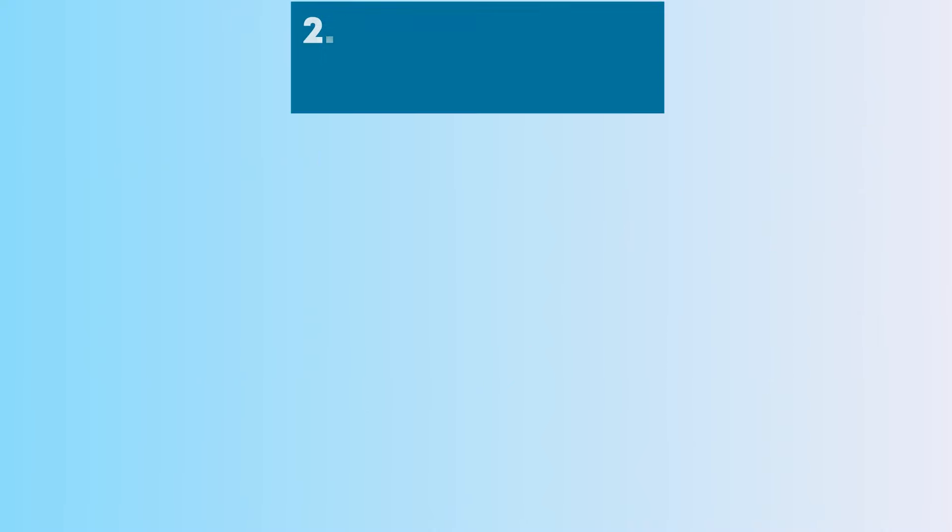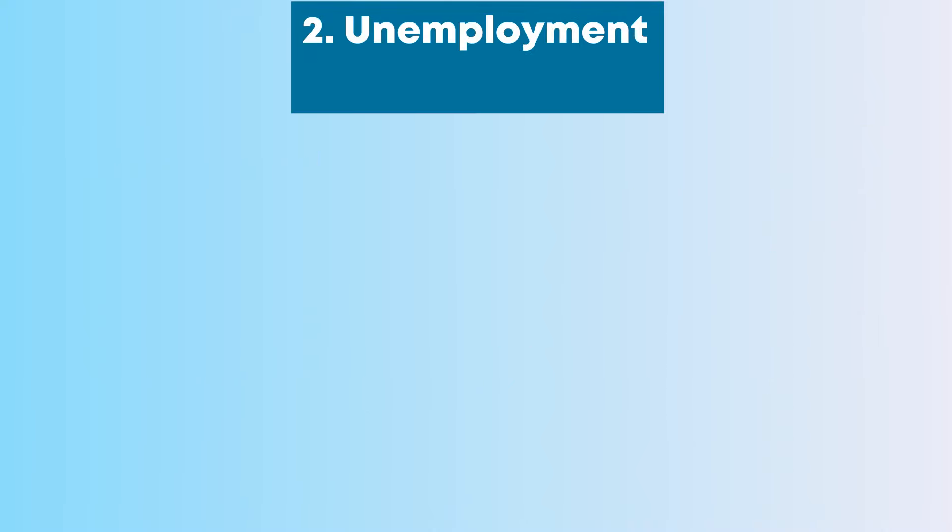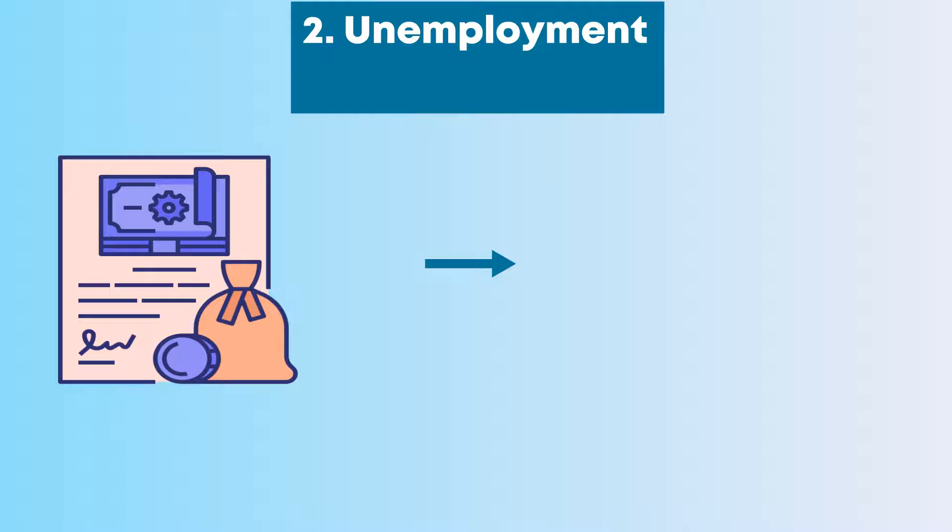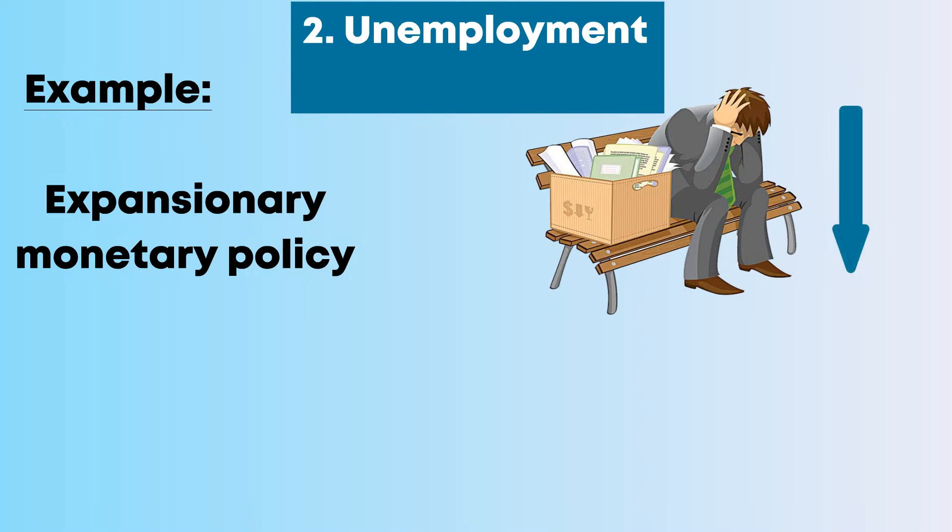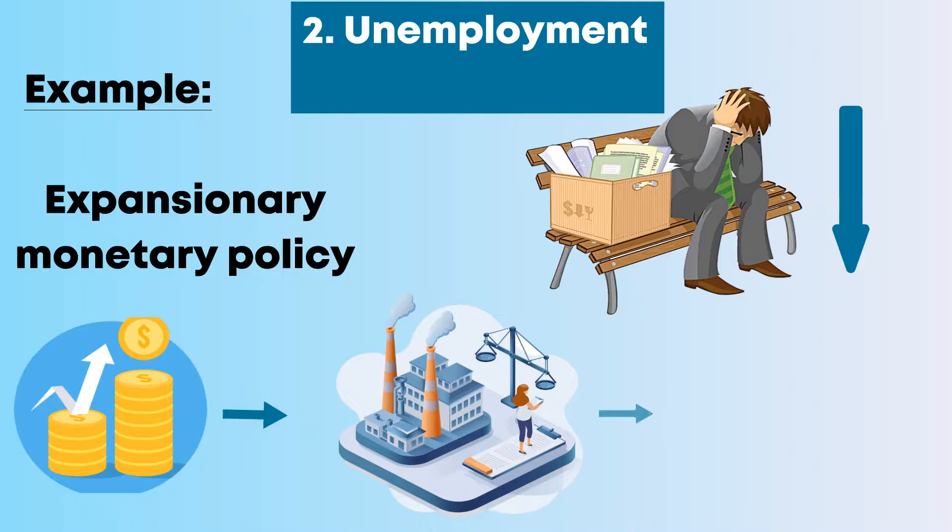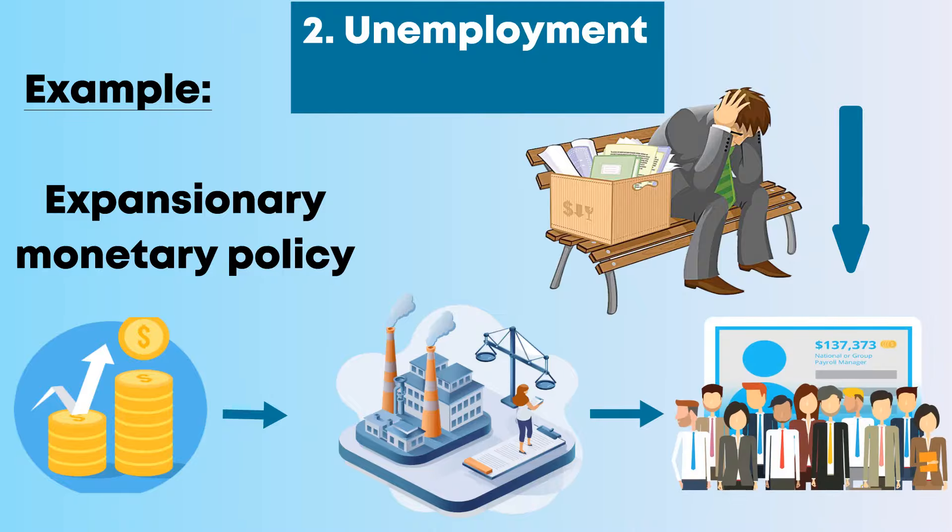Second, unemployment. Monetary policies can influence the level of unemployment in the economy. For example, an expansionary monetary policy generally decreases unemployment because the higher money supply stimulates business activities that lead to the expansion of the job market.